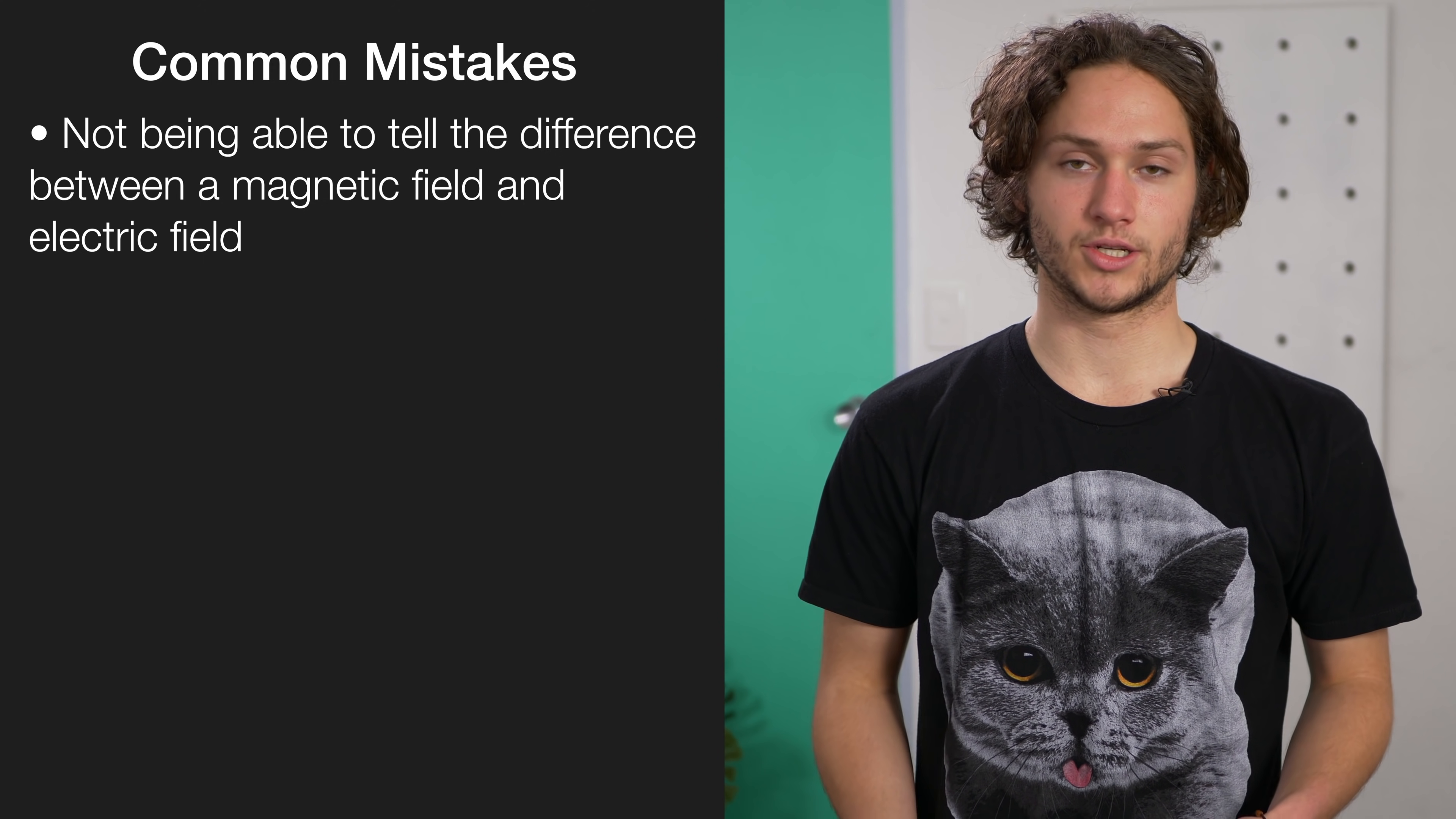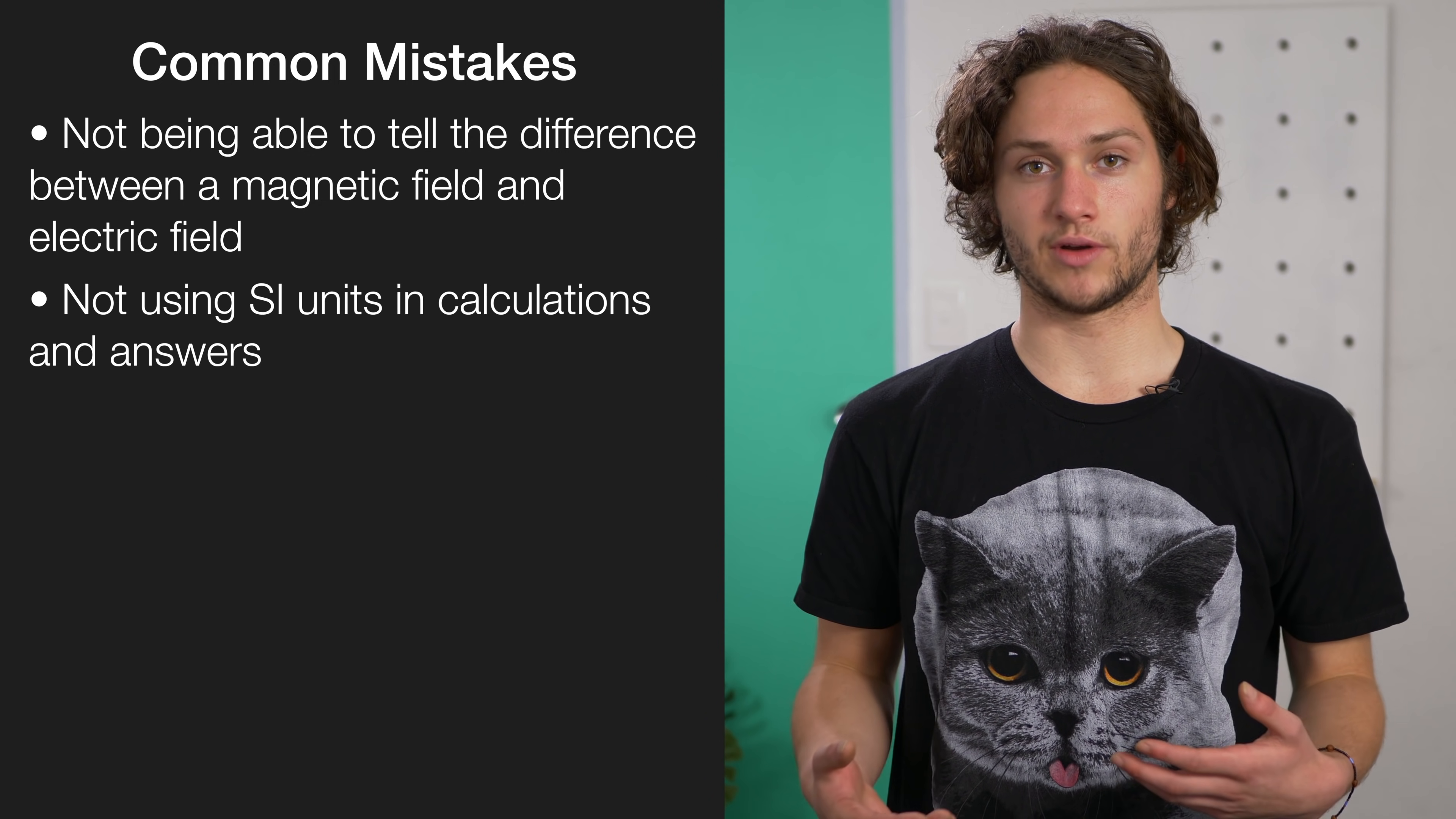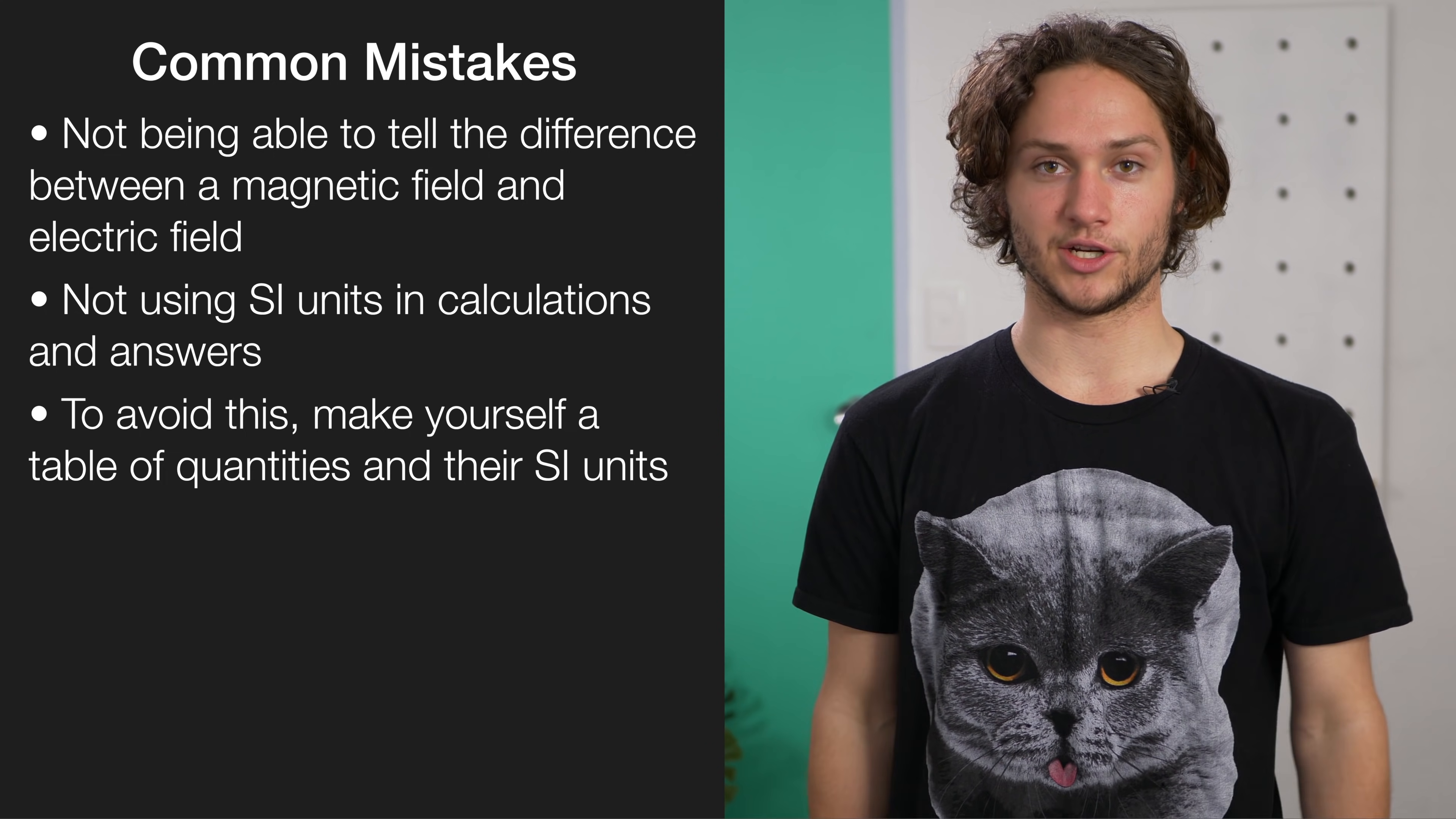Another really common mistake is students not using SI units in their calculations and in their answers. For example, converting millicoulombs into coulombs. A really good study strategy here is to make a large table of all of the quantities and the SI units so that you know how to convert them to the SI units in order to get the correct calculations.